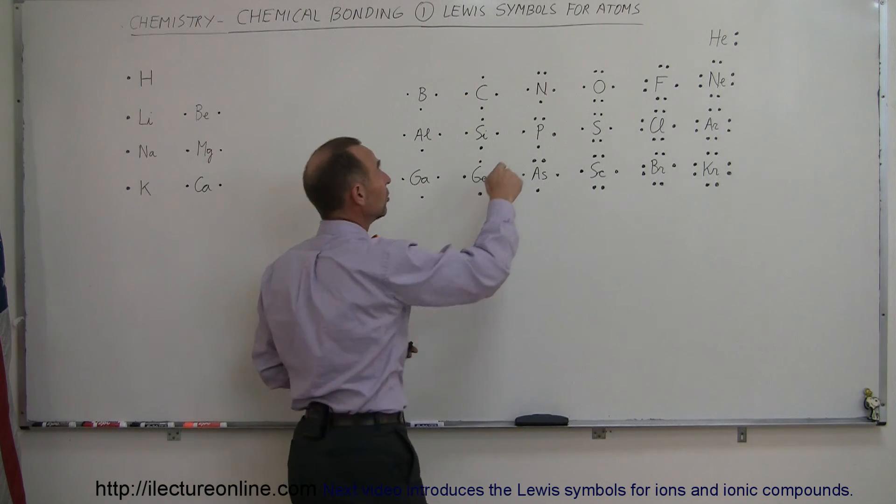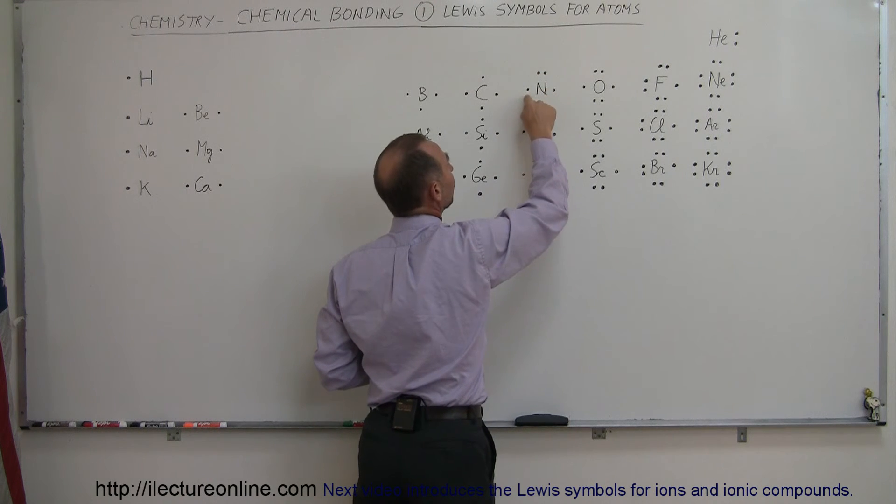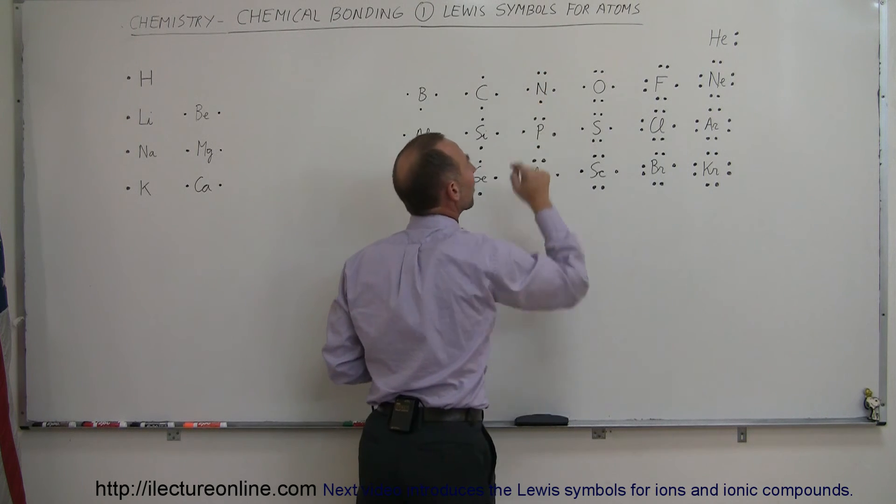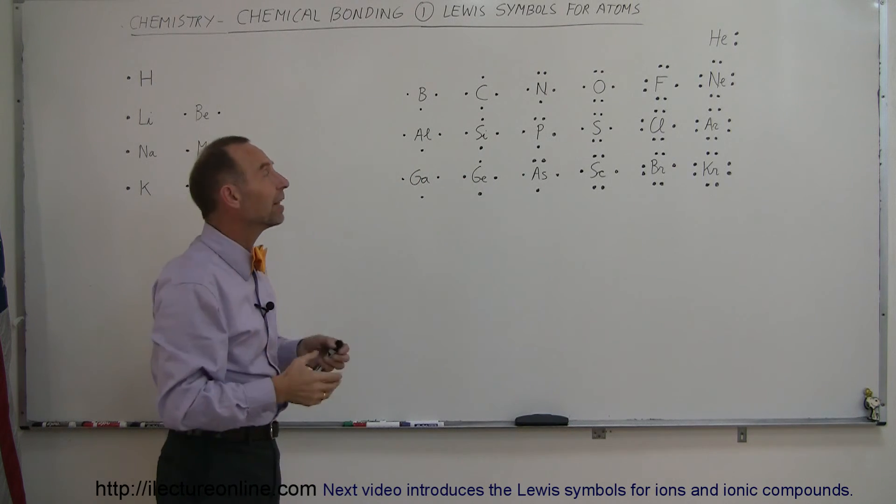As opposed to nitrogen, which already has one of its orbitals completely filled. And so there's only a possibility of three bonds with nitrogen because there's only three empty spots in the valence band.